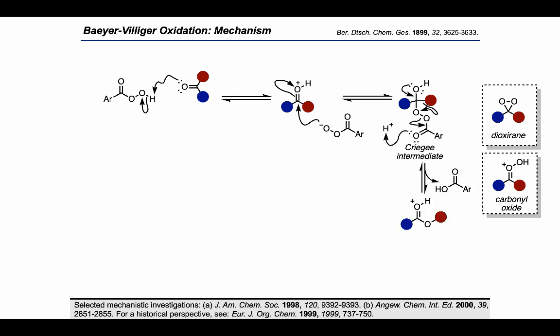The Criegee intermediate can then rearrange, where one of the groups migrates to form a new carbon-oxygen bond as we regenerate the carbonyl. It's important to note that migration occurs with retention of stereochemistry on the migrating group. Then finally, a deprotonation results in the formation of the product.